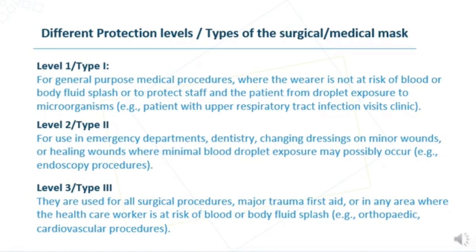There are different protection level types of the surgical or medical mask. Level one, or Type one, is for general purpose medical procedures where the wearer is not at risk of blood or body fluid splash, or to protect staff and patients from droplet exposure to microorganisms — for example, patients with upper respiratory tract infection visiting the clinic.